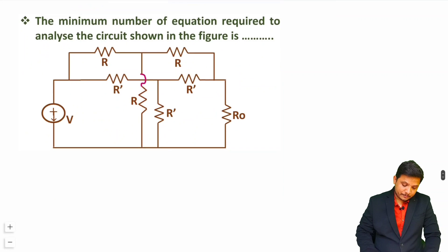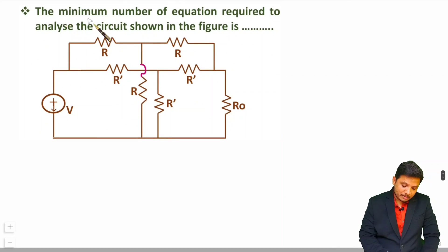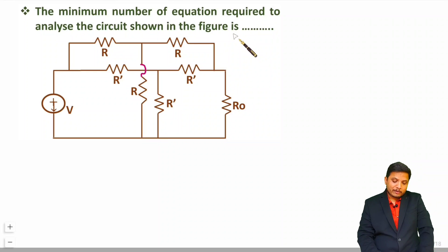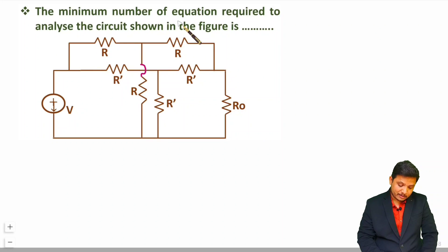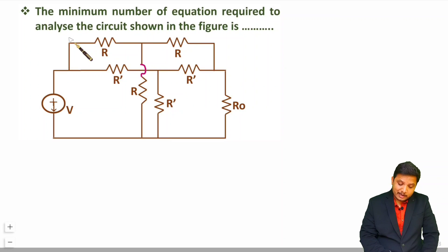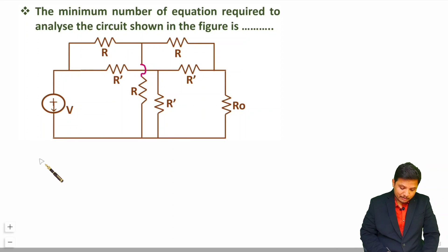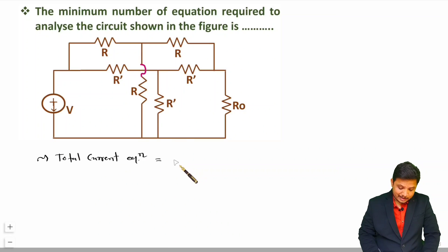Let us have the third question. The minimum number of equations required to analyze the circuit shown in the figure is how many? Whenever you need to find the minimum number of equations, remember you must identify minimum current equations, because nodal analysis cannot identify all the currents. The formula for total current equations is number of branches minus number of nodes plus 1.